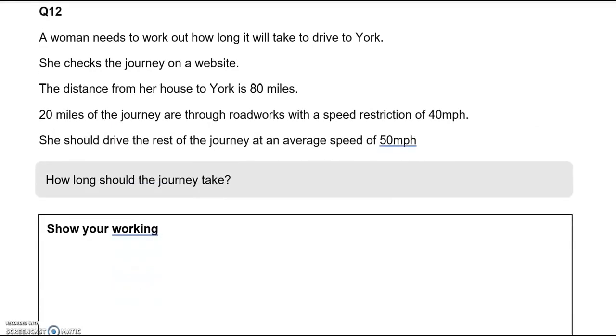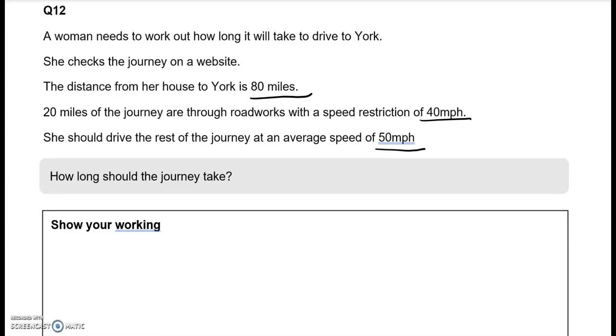A woman needs to work out how long it will take to drive to York. She checks the journey on a website. The distance from her house to York is 80 miles. 20 miles of the journey are through road works with a speed restriction of 40 miles per hour. She should drive the rest of the journey at an average speed of 50 miles per hour. How long should the journey take? Show your working. So we're talking about speed here. And the first thing to do is to write the speed formula. And if you don't remember that, it's fine because the way we write speed normally is something like 60 miles per hour. So that tells you what's the formula. Speed is miles, that's distance, and hours tell us about time. So now we've got two different speeds here. So we'll break the journey into two parts. The 20 miles, the first 20 miles, and then 60 miles to make 80.